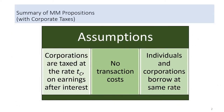There are three key assumptions for the MM propositions in a world with corporate taxes. First, we assume that corporations are taxed at the rate taxed on earnings after interest. Second, there is no transaction cost. Third, individuals and corporations borrow at the same rate.